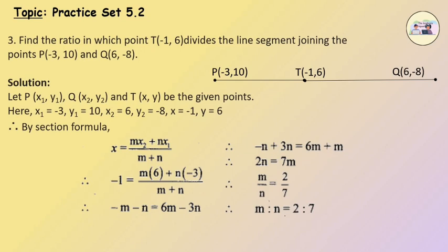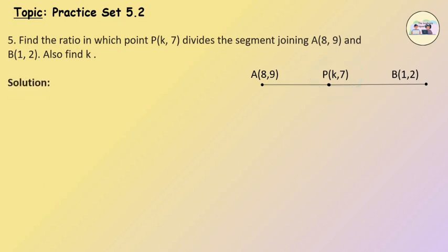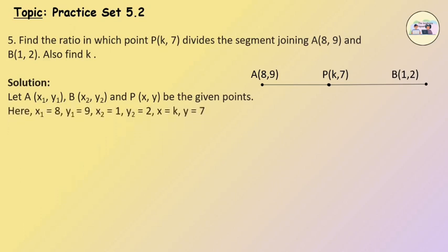Question No. 5: Find the ratio in which point P(k, 7) divides the segment joining A(8, 9) and B(1, 2). Also find k. Since we know the y-coordinate of point P, we can use the section formula to find m and n, and then use the ratio to find k. Let A be (x1, y1), B be (x2, y2), and P be (x, y). Here x1 = 8, y1 = 9, x2 = 1, y2 = 2, x = k, y = 7.